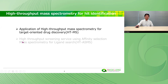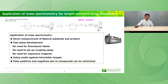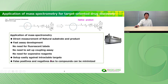The first topic is the application of High-Throughput Screening Mass Spectrometry for target-oriented drug discovery. Using mass spectrometry, we can directly measure a natural substrate and product. An advantage of mass detection is fast assay development and easy setup against intractable targets. False positives and negatives due to compound interference can be minimized compared to fluorescence assay and coupling assay.